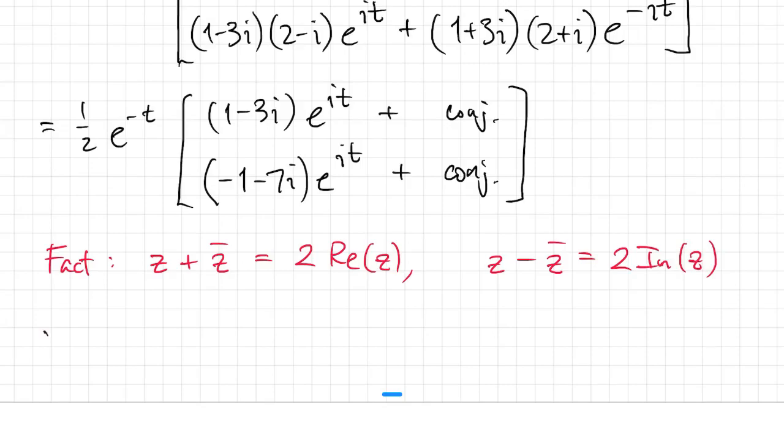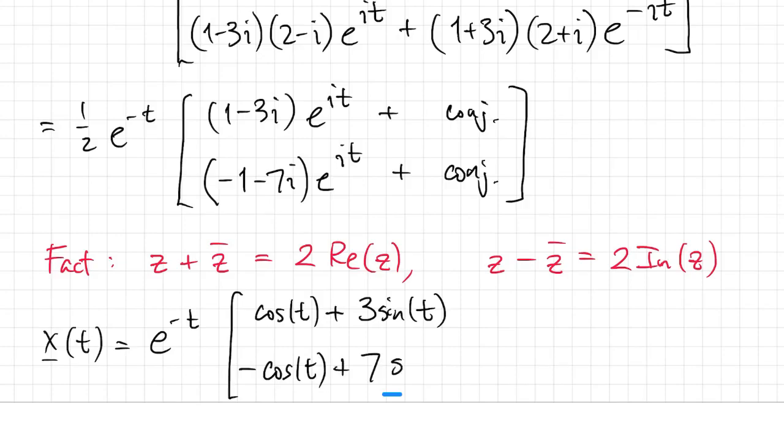So finally, that two cancels out the one half out in front. And I just need to take the real part of this product, 1 minus 3i times e to the it. And I'll use Euler's identity to do that. And then the real part of this product, and we're done.